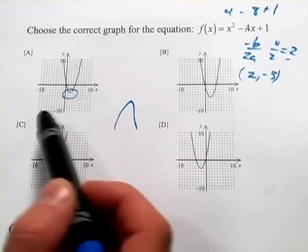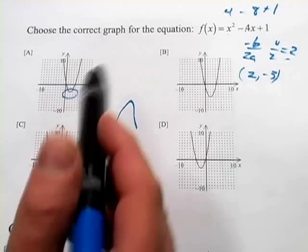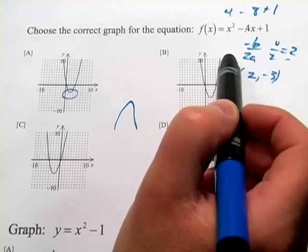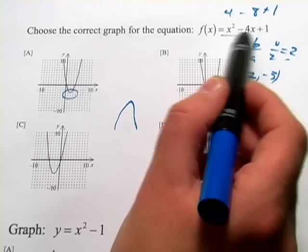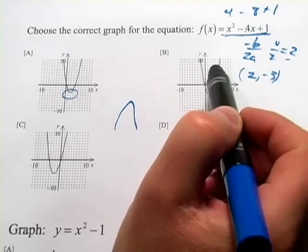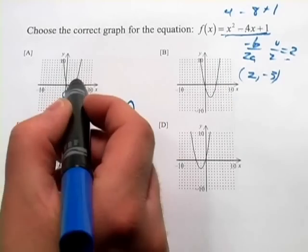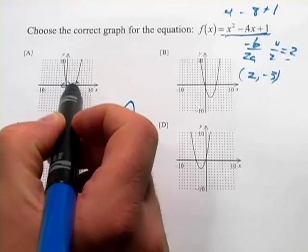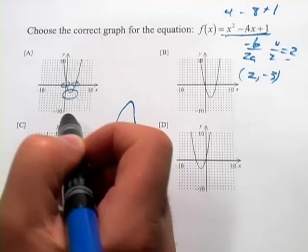Another thing you could do, if you wanted to double-check, you can always solve this equation. Try to find the zeros of this function, where you set the function equal to 0. That's these points right here, where the function crosses the X-axis.